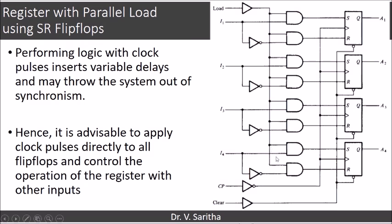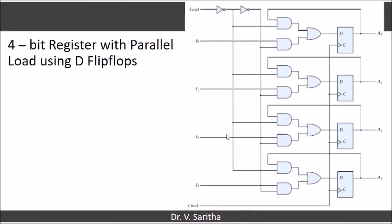Resistor with parallel load using SR flip-flops. Clear is used to clear the contents of the resistor — the resistor contents will become 0. Now we will see the 4-bit resistor with parallel load using D flip-flops. Using D flip-flops we do not have the no-change state, so for that reason we are using a particular AND gate connection. When load is equal to 0, the state of the resistor should be no change, so the outputs of the flip-flop are connected to one of the inputs of the AND gate.